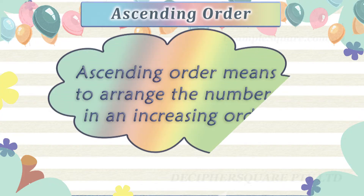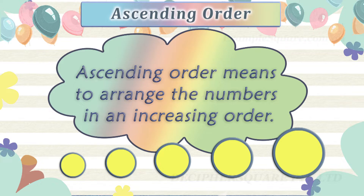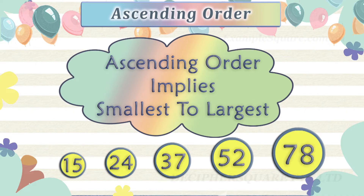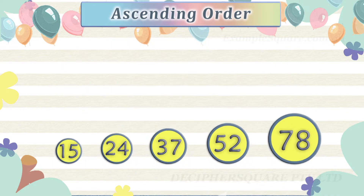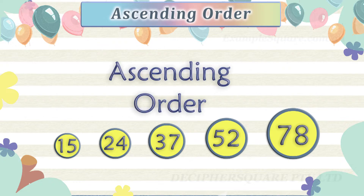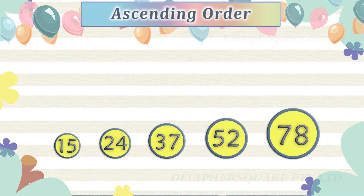Arranging numbers in an ascending order means to arrange the numbers in an increasing order, that is from the smallest to the largest. For example, these numbers are arranged in ascending order, that is from the smallest number to the largest number.